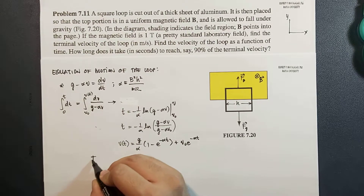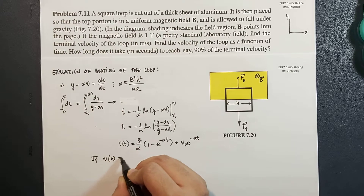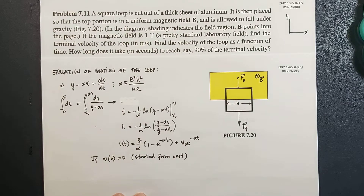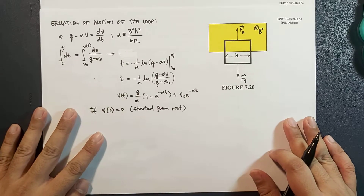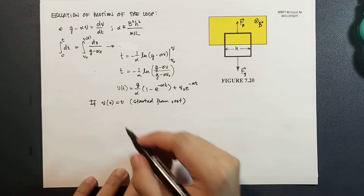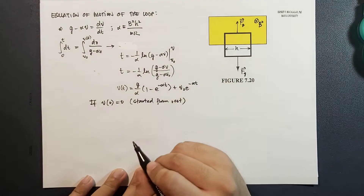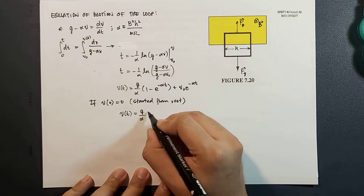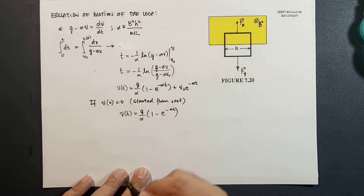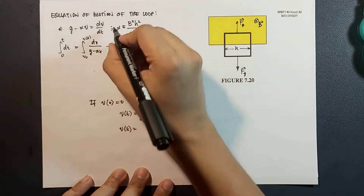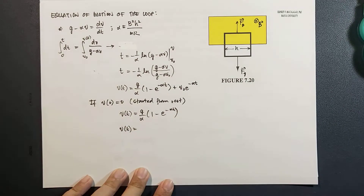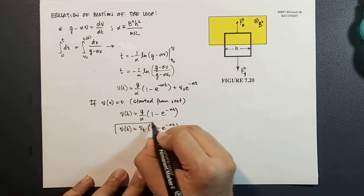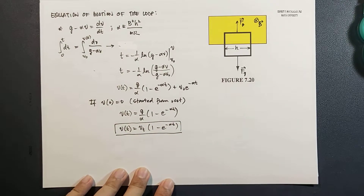Now, if the velocity at time equal to zero is zero — meaning we started from rest — then v0 equals zero, and the velocity as a function of time becomes g over alpha times (1 minus e to the negative alpha t). In terms of the terminal velocity calculated earlier, g over alpha is the terminal velocity vt, so this is vt times (1 minus e to the negative alpha t). This is the velocity as a function of time.